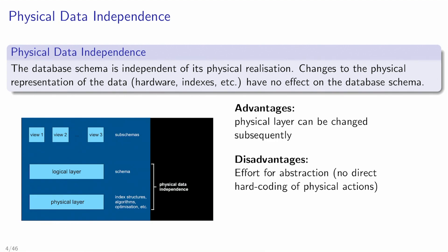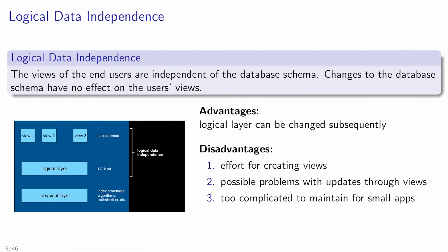Physical data independence also allows the database system to scale to whatever size you want. When you define a schema you don't have to worry about scalability — if you want to scale it to a galaxy-size database system you can do that; you just have to think about how to map the schema to the physical layer, but that's the database's job. That's physical data independence, and you get it for free.